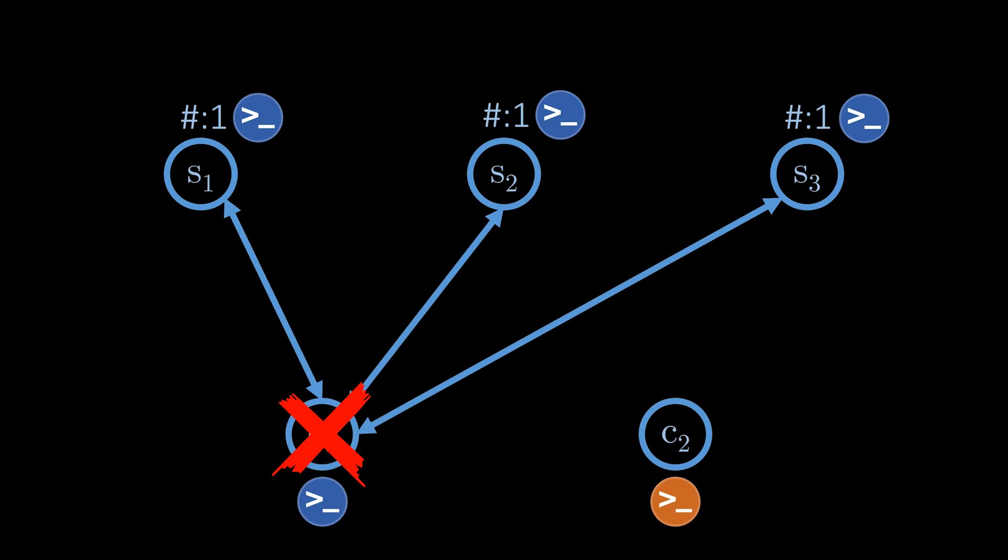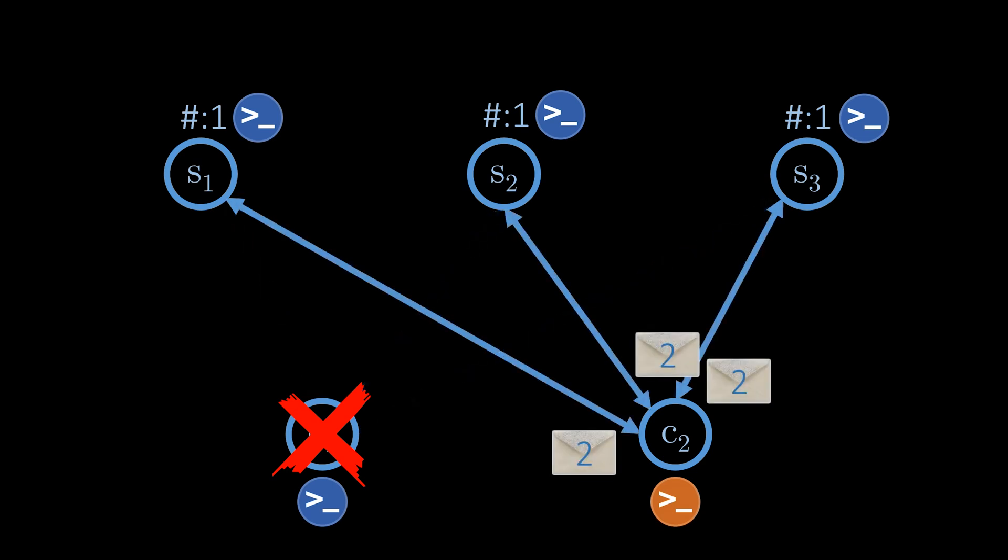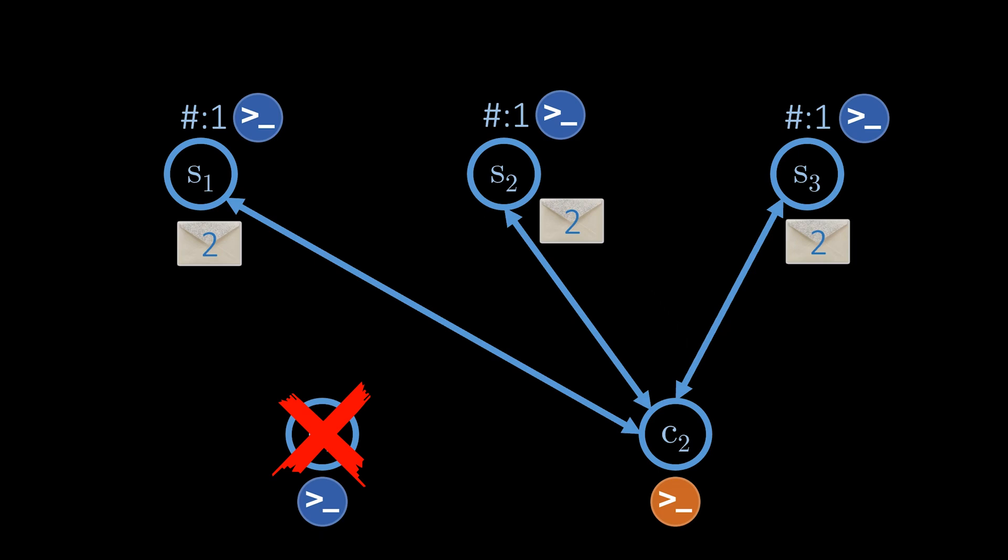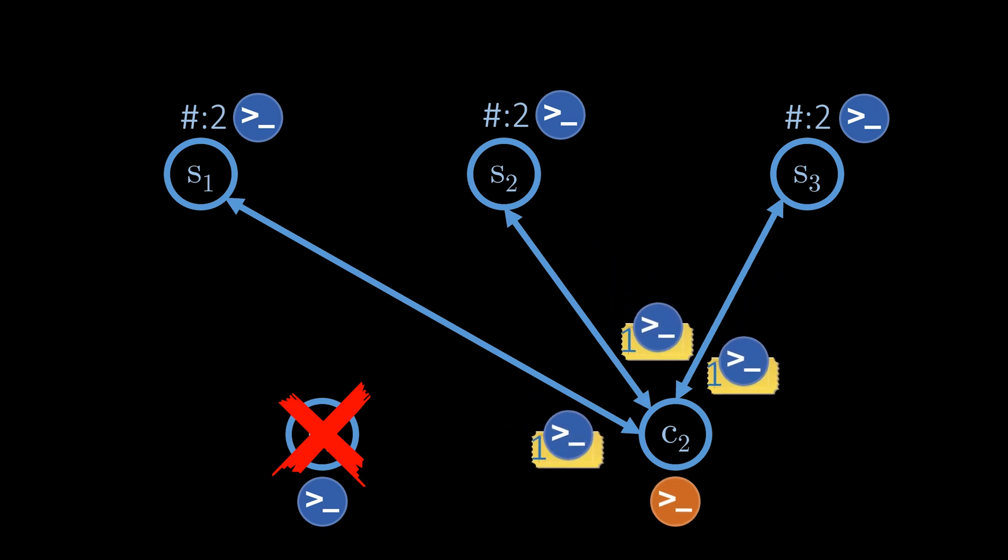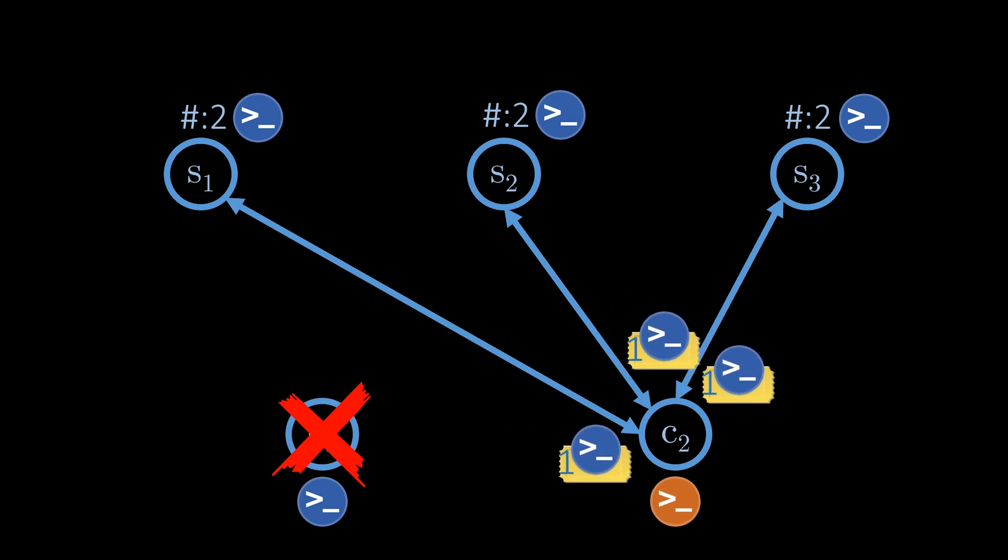We assume that client 2 has already learnt that the next valid ticket number is 2, so it sends a request for ticket number 2. The servers accept the request, but since they already stored a command, they return the ticket together with the command of client 1 and the ticket number 1 used to store the command.